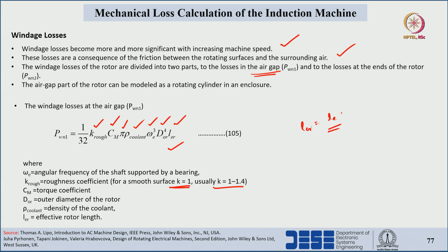If different rotor length and stator lengths are present, then effective core length can be calculated with empirical formulas. Here L_er is considered the same as L_e where both stator and rotor lengths are equal. By utilizing this equation we can find the windage losses at the air gap; the proof is given in the referenced textbook.